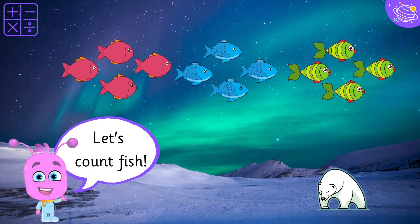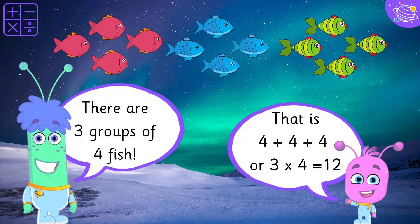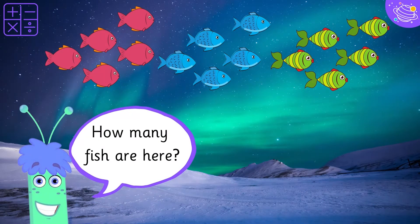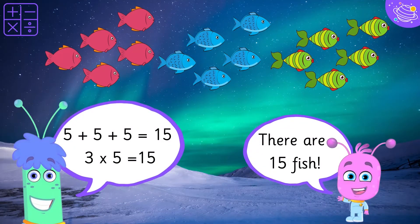Let's count fish. There are groups of 4 fish. That is 4 plus 4 plus 4, or 3 times 4 equals 12. How many fish are there? 5 plus 5 plus 5 equals 15. 3 times 5 equals 15. There are 15 fish.